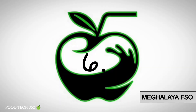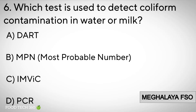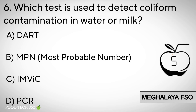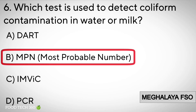Question number 6: Which test is used to detect coliform contamination in water or milk? Options: A. DART. B. MPN. C. IMViC. D. PCR. Correct answer: B. MPN — Most Probable Number.